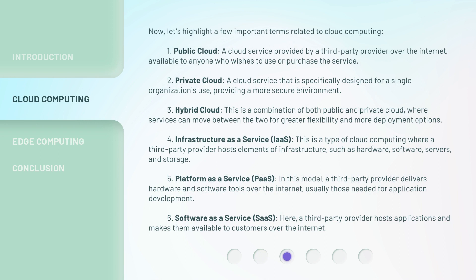Now, let's highlight a few important terms related to cloud computing. 1. Public cloud: a cloud service provided by a third-party provider over the internet, available to anyone who wishes to use or purchase the service. 2. Private cloud: a cloud service that is specifically designed for a single organization's use, providing a more secure environment. 3. Hybrid cloud: a combination of both public and private cloud, where services can move between the two for greater flexibility and more deployment options.